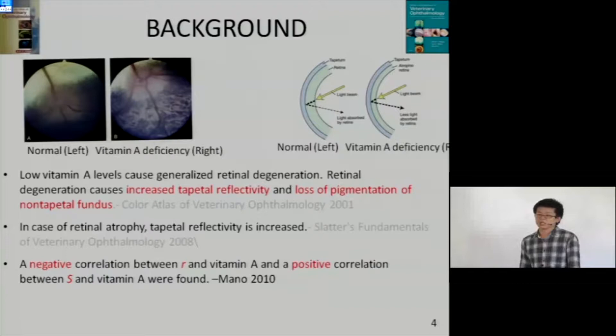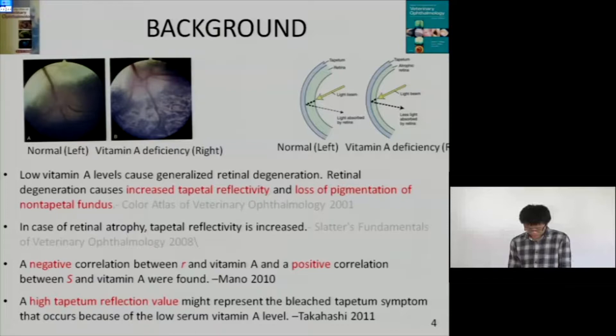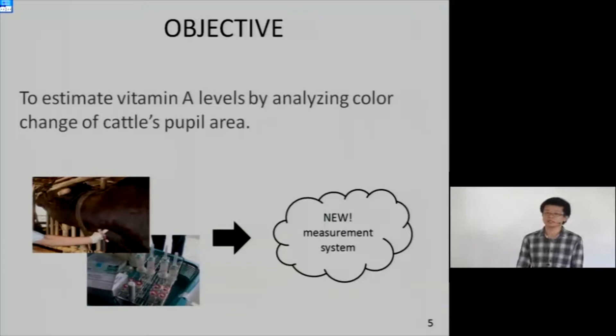We conducted this experiment from 2010. In that year's result, we found negative correlation between the red component ratio and vitamin A, and positive correlation between the saturation and vitamin A level. In 2011, we conducted another experiment. We cut the eyeball of normal cattle and vitamin-deficient cattle, and found higher tapetum reflection value in vitamin-deficient cattle. Our objective is to estimate vitamin A level by analyzing the color change of cattle's pupil area.